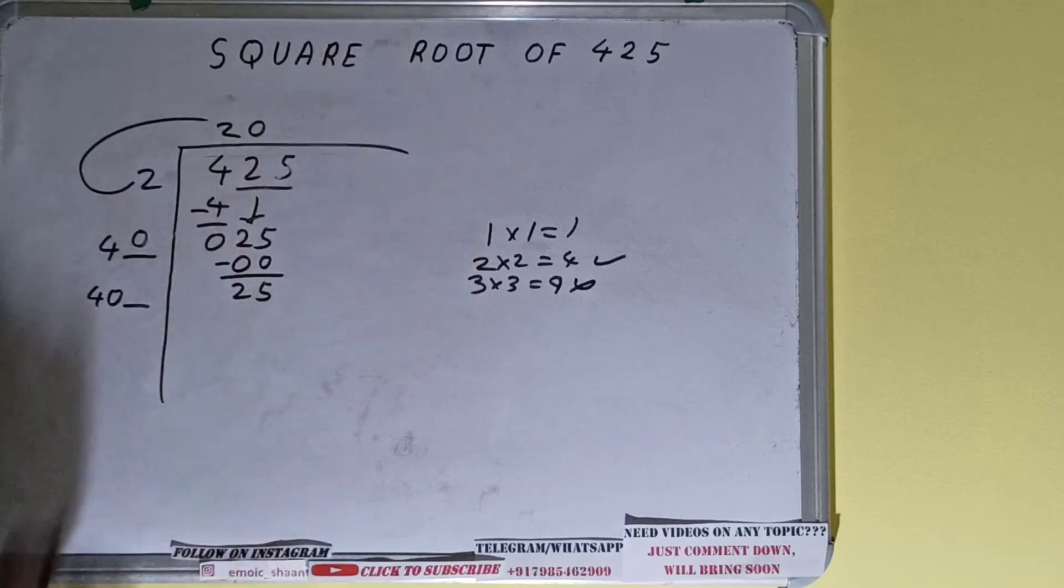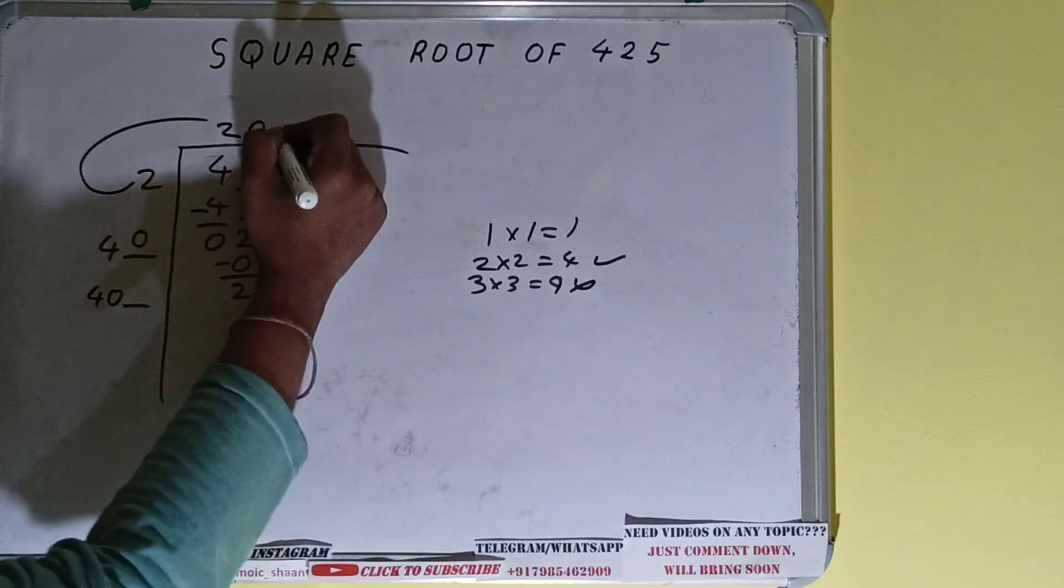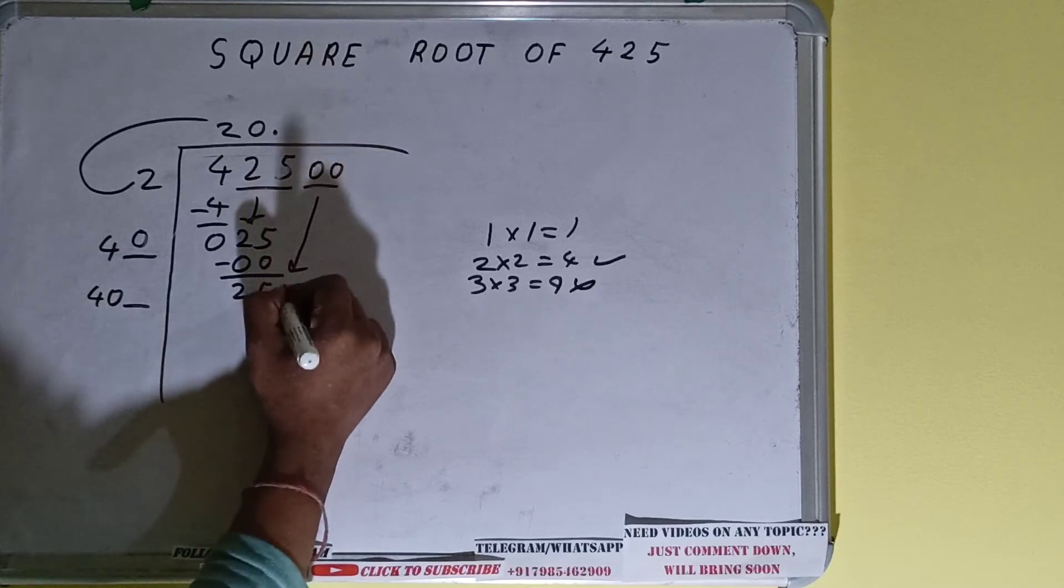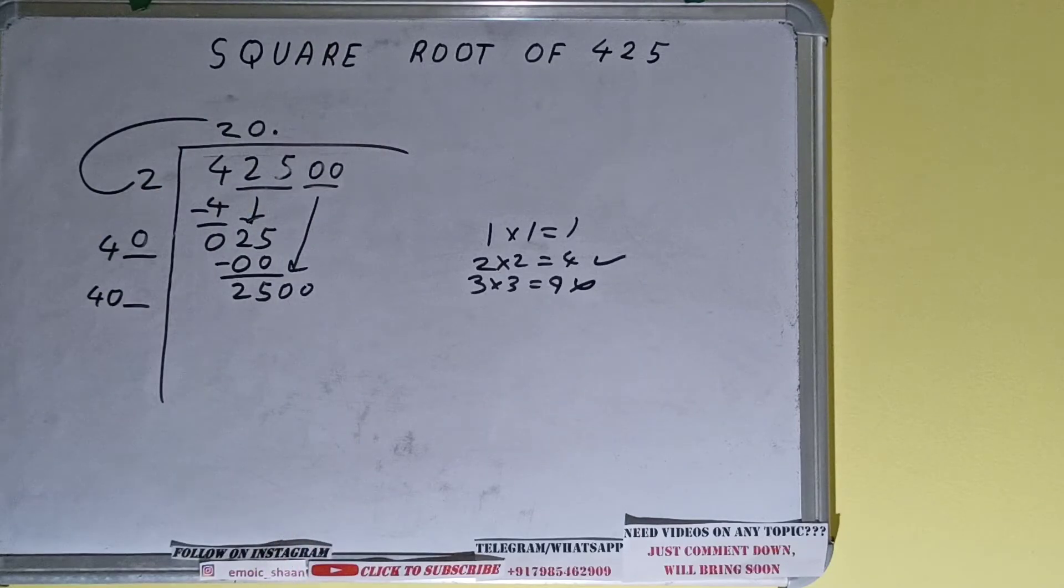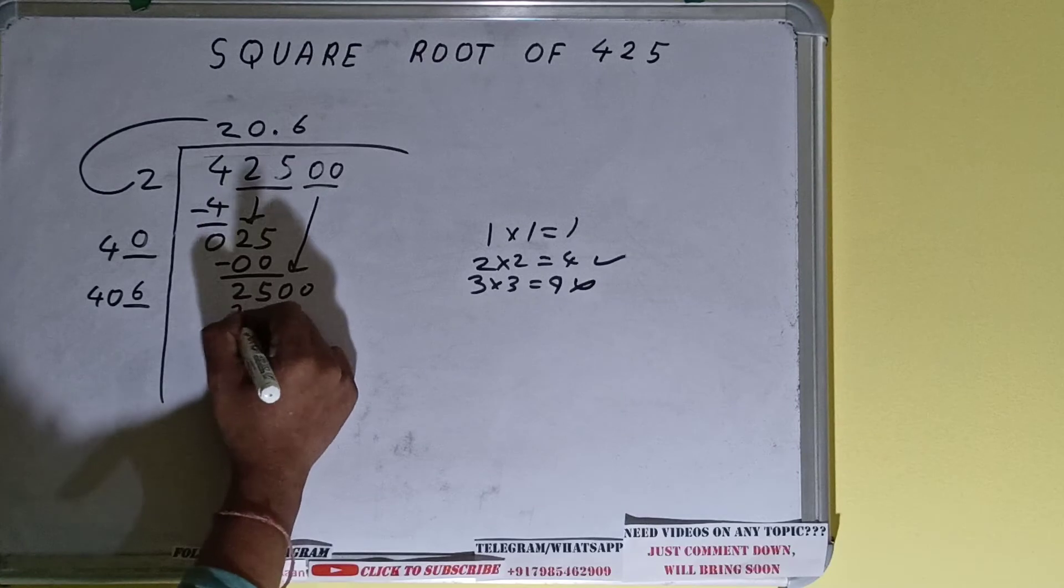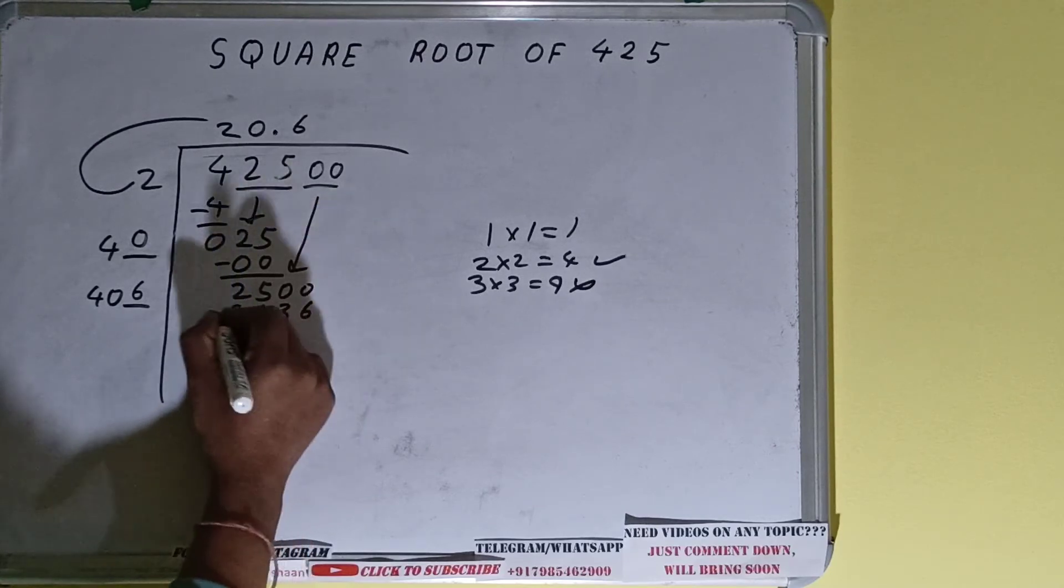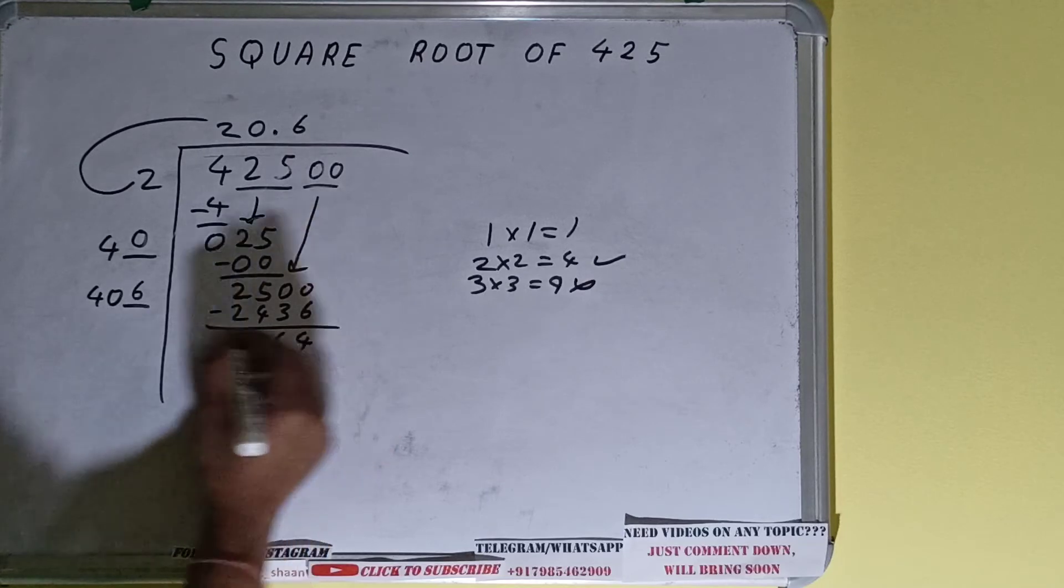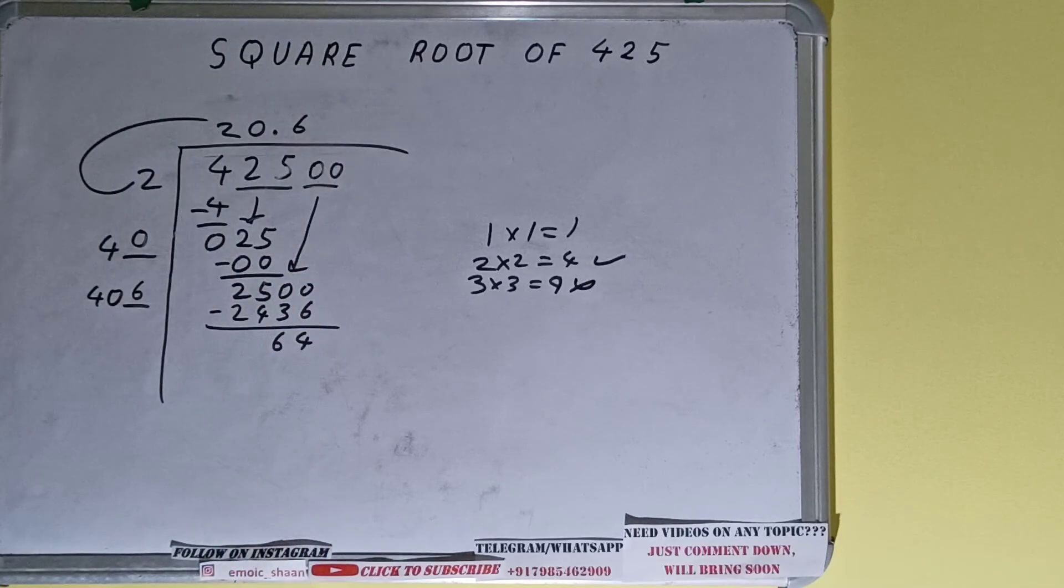This number we need to make it big but we don't have any more pairs, so we will put a decimal. Once we put decimal we can bring down a pair of zeros and the number will become 2500. Now we can try 6 times - six here and six here will give 2436. On subtracting, 64 will be left. Now 406 into 6, so add both - 406 plus 6 will be 412.